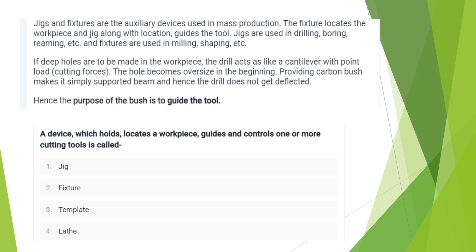A jig is an auxiliary device for locating the workpiece. The jig is mainly used to guide the tools for drilling, boring, and milling operations. In a workpiece with deep holes, the tool can deflect like a cantilever under load, causing the hole to become oversize. We provide a bush to support and guide the tool so it will not get deflected.